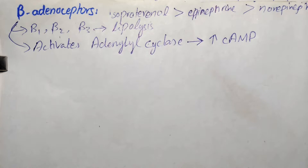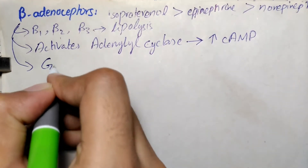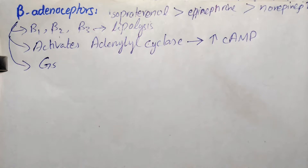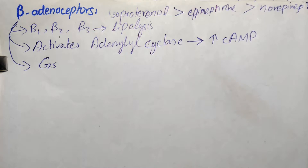Beta adrenoceptors are GS-coupled protein receptors. GS and GQ are stimulating proteins, whereas GI is an inhibitory protein. When an agonist binds to a beta receptor, there is stimulation of adenylyl cyclase — the effector molecule — causing an increase in the concentration of secondary messenger molecules, producing a stimulating effect. This is in contrast to GI-coupled alpha 2 receptors, which inhibit effector molecules.